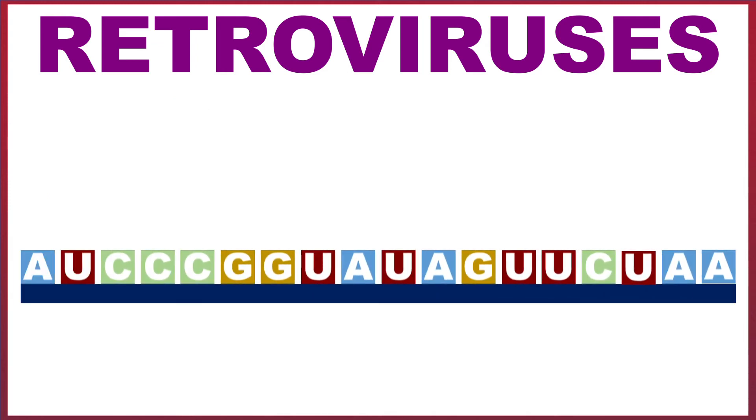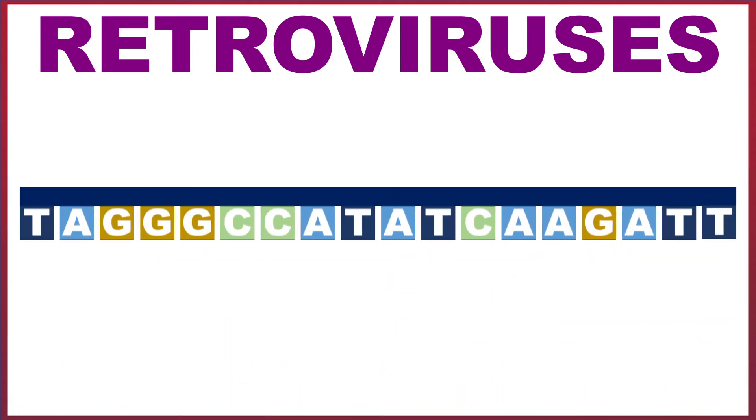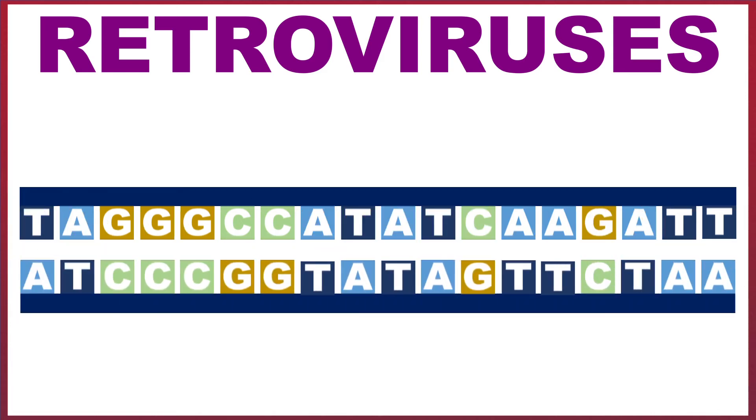In retroviral replication, the single-stranded RNA undergoes reverse transcription to form single-stranded DNA. This DNA is then replicated using DNA polymerase to produce the viral double-stranded DNA genome.